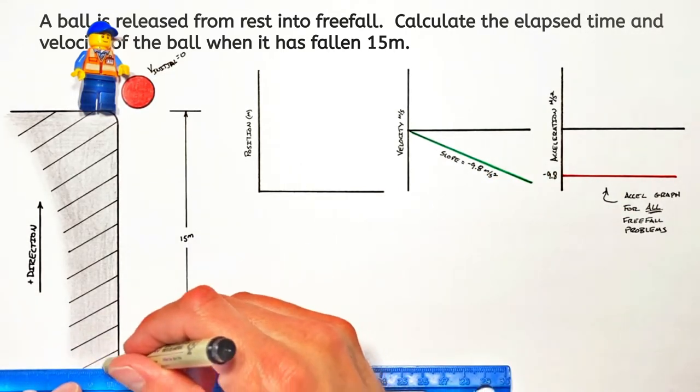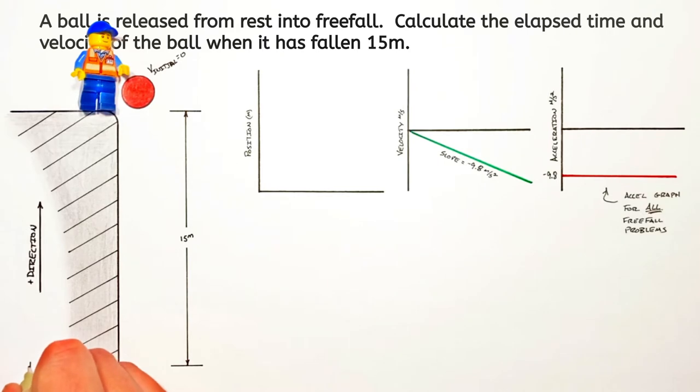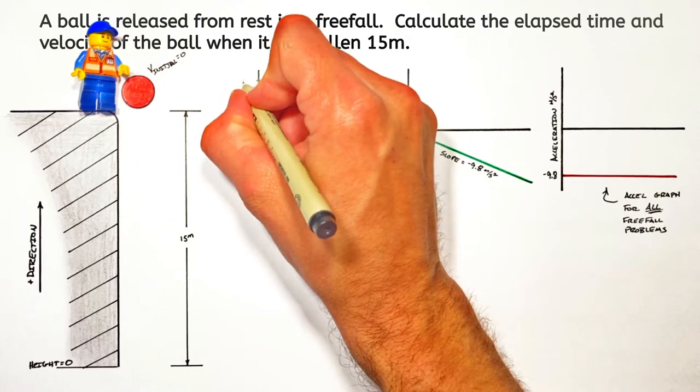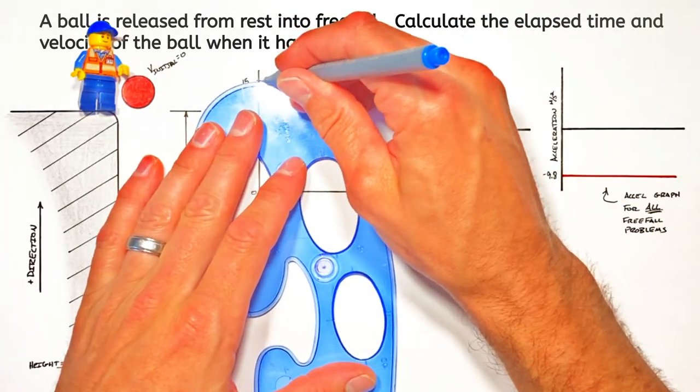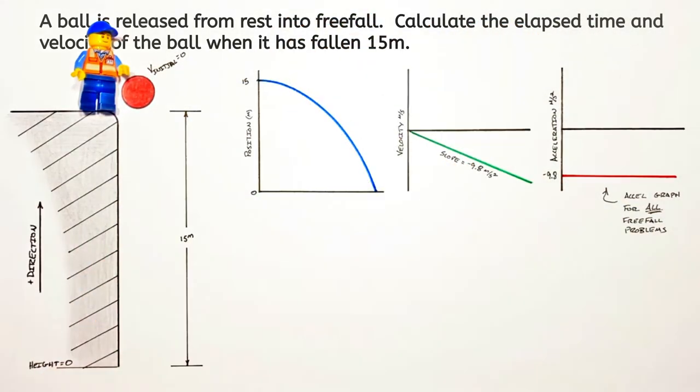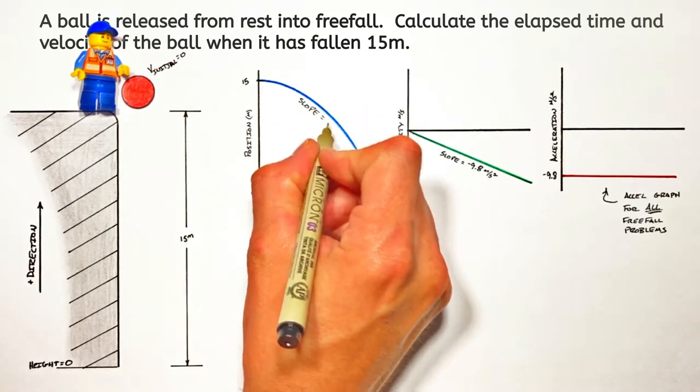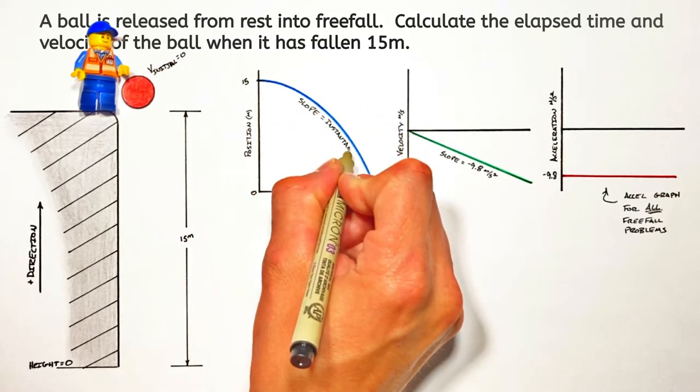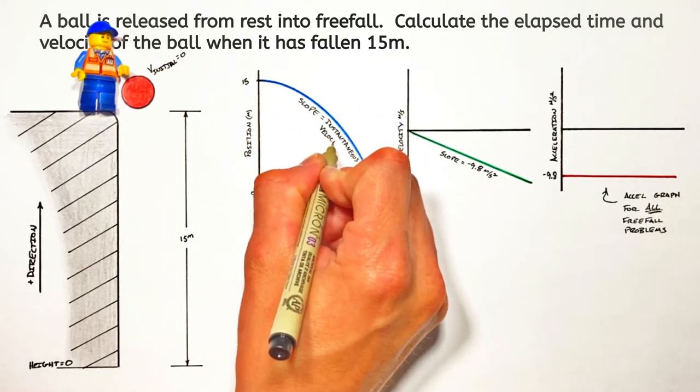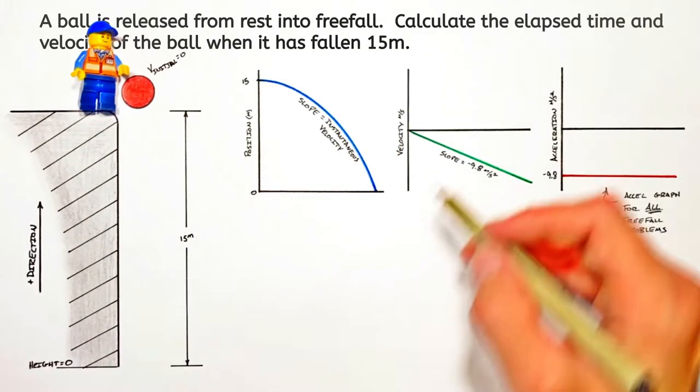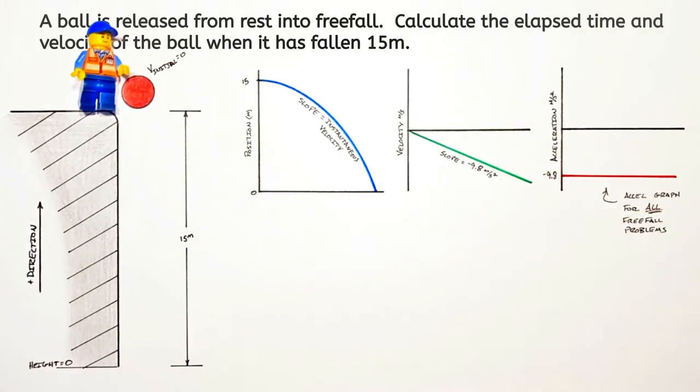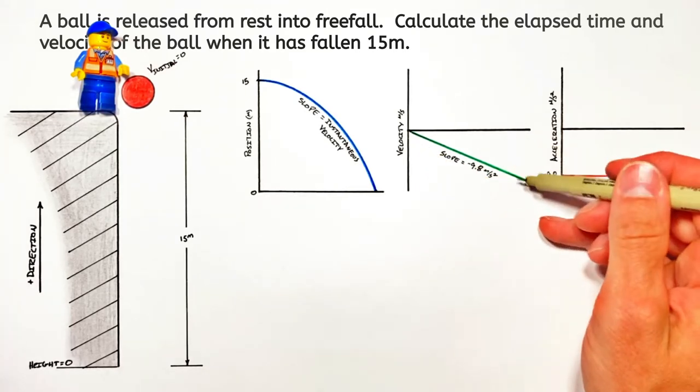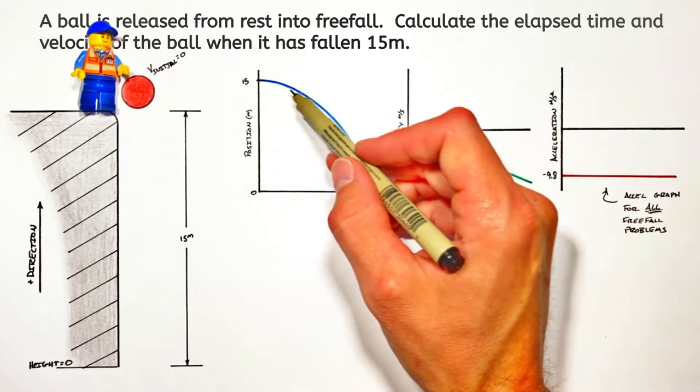Now moving on to position. It doesn't matter where we choose to call a height of zero, but I find the lowest point in the problem is typically the easiest. The graph of position versus time is a parabola, and that's because the slope of a position versus time graph is equal to the instantaneous velocity of that object. So as the ball moves downward and speeds up, it's going to move farther and farther every second, meaning we'll see the position graph become steeper and steeper.